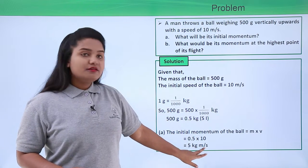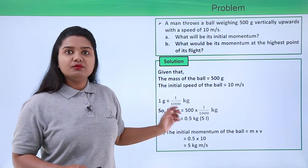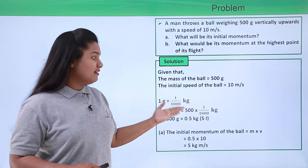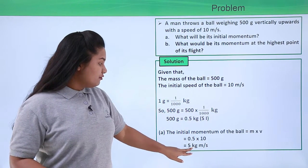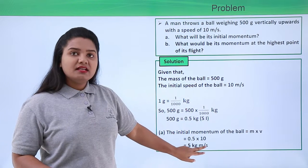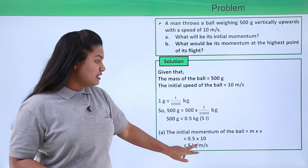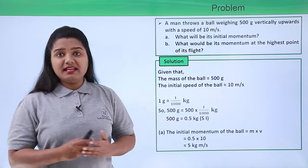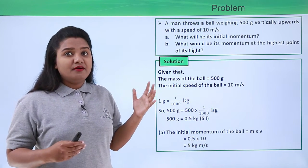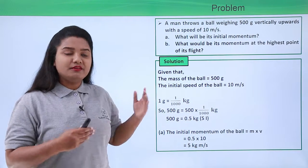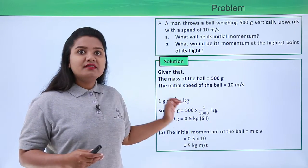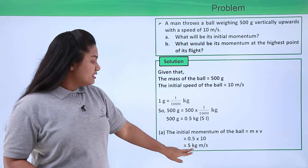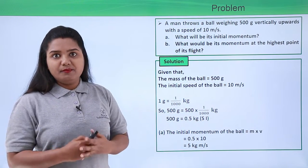Now here you must not forget to mention the unit of any physical quantity while solving a problem or while writing it anywhere. So here the unit of momentum is kg meters per second. So I have put the unit here. Without the unit physical quantity has no meaning at all. So it is of much importance that you put the units wherever required. Now this is the initial momentum with which the ball was thrown vertically upwards.